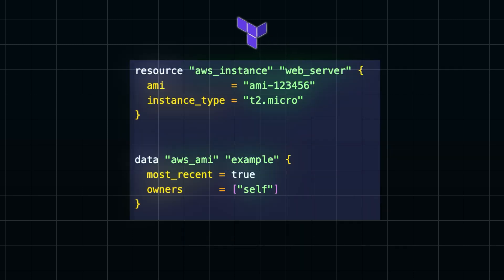Let's look at two important building blocks in Terraform: the resource block and the data block. The resource block is the foundation of Terraform configurations — it defines the specific infrastructure you want to create, like a virtual machine, database, or storage bucket. For example, an AWS EC2 instance would look like this. The data block allows you to query existing infrastructure without managing it directly in Terraform. For example, if you want to reference an existing AMI in AWS, you would use a data block like this. These blocks give you the flexibility to manage and reference infrastructure seamlessly.